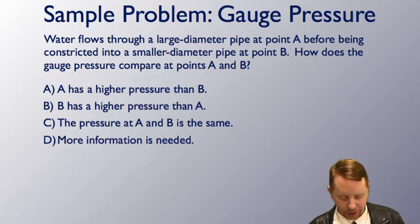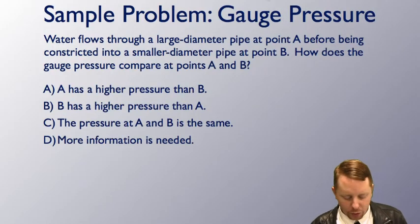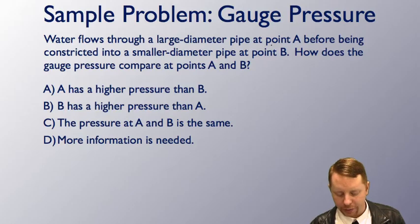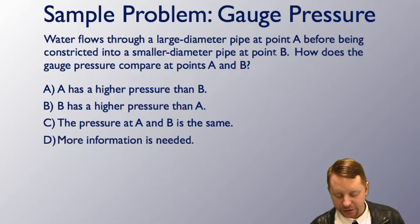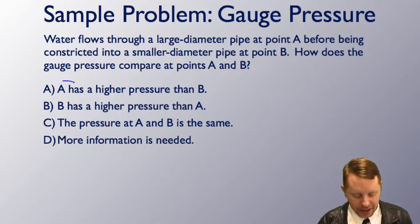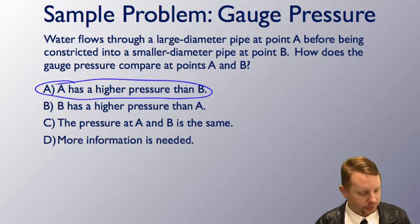Let's take a look at another problem with gauge pressure. Water flows through a large diameter pipe at point A before being constricted into a smaller diameter pipe at point B. How does the gauge pressure compare at points A and B? Well, it must be going faster at B due to the continuity equation, smaller diameter, faster flow, and if it's going faster, it has lower pressure. So A must have a higher pressure than B.